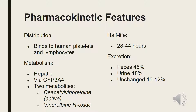Vinorelbine is distributed throughout the body by binding to human platelets and lymphocytes. It is metabolized mainly by the liver via the CYP3A4 enzyme. Vinorelbine has two metabolites: the active metabolite is deacetyl-vinorelbine, and vinorelbine N-oxide, which is inactive.